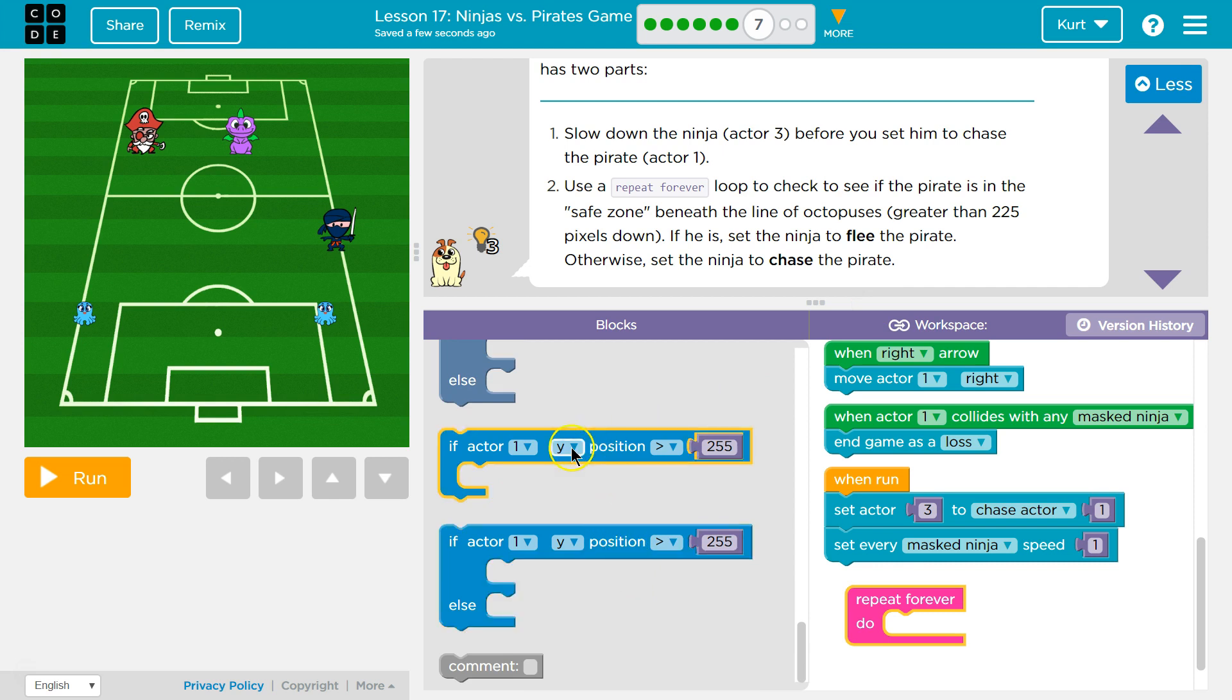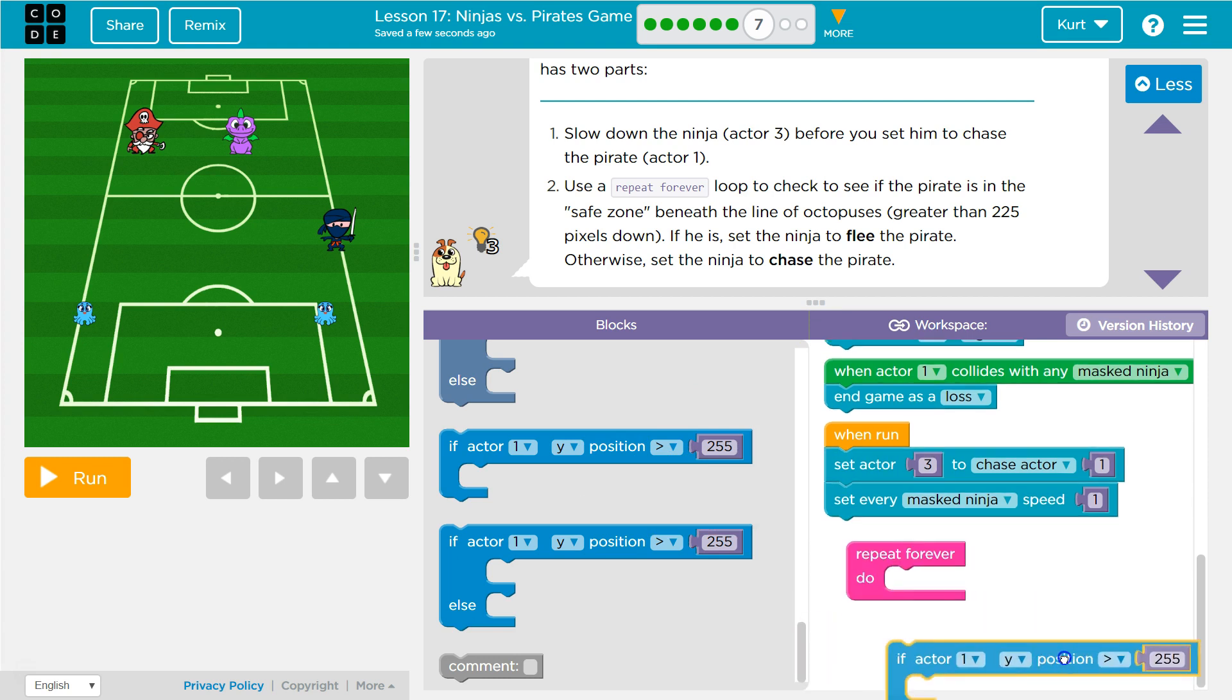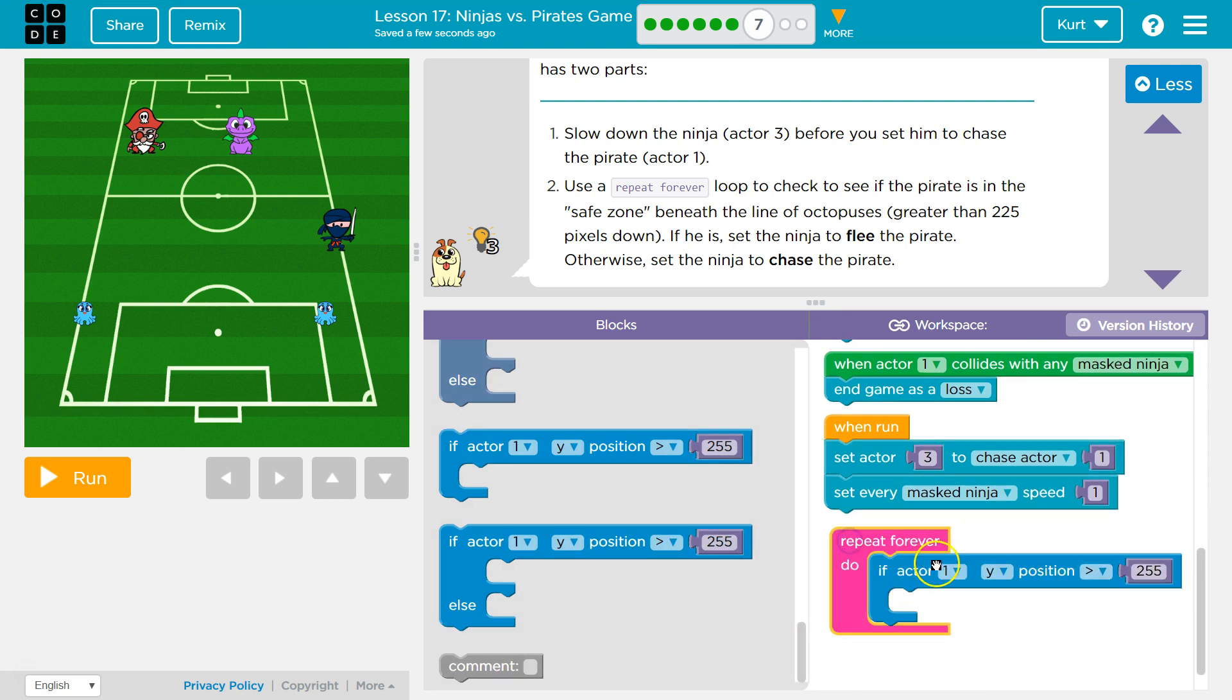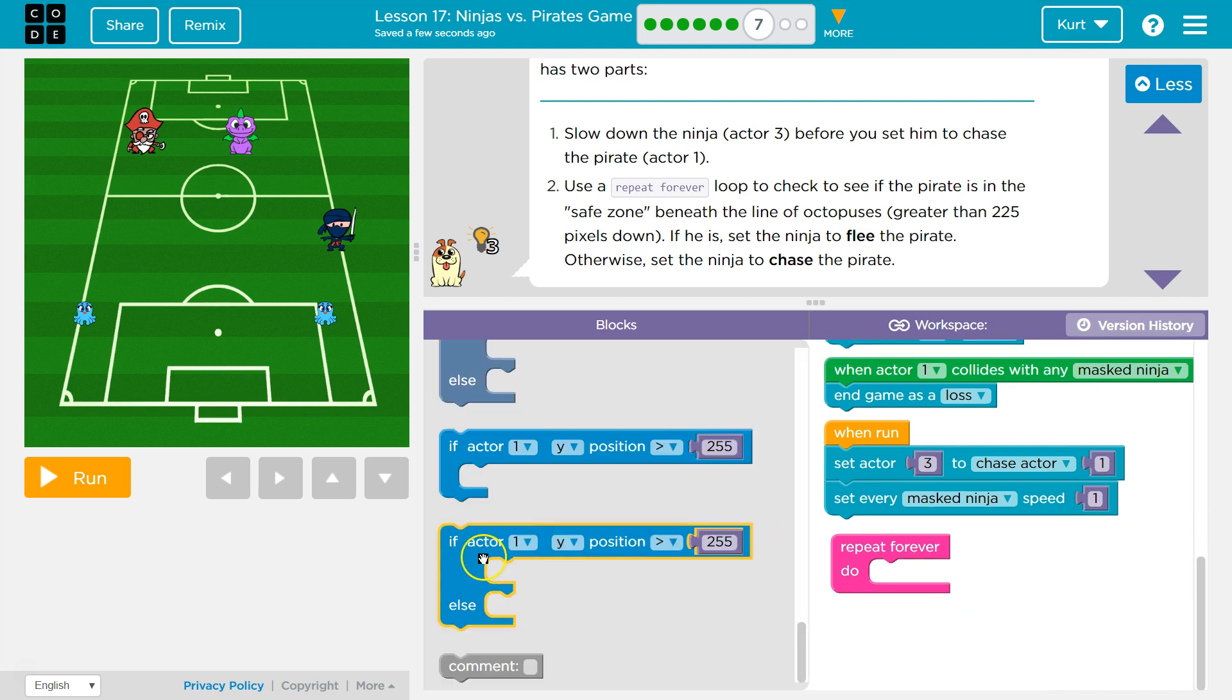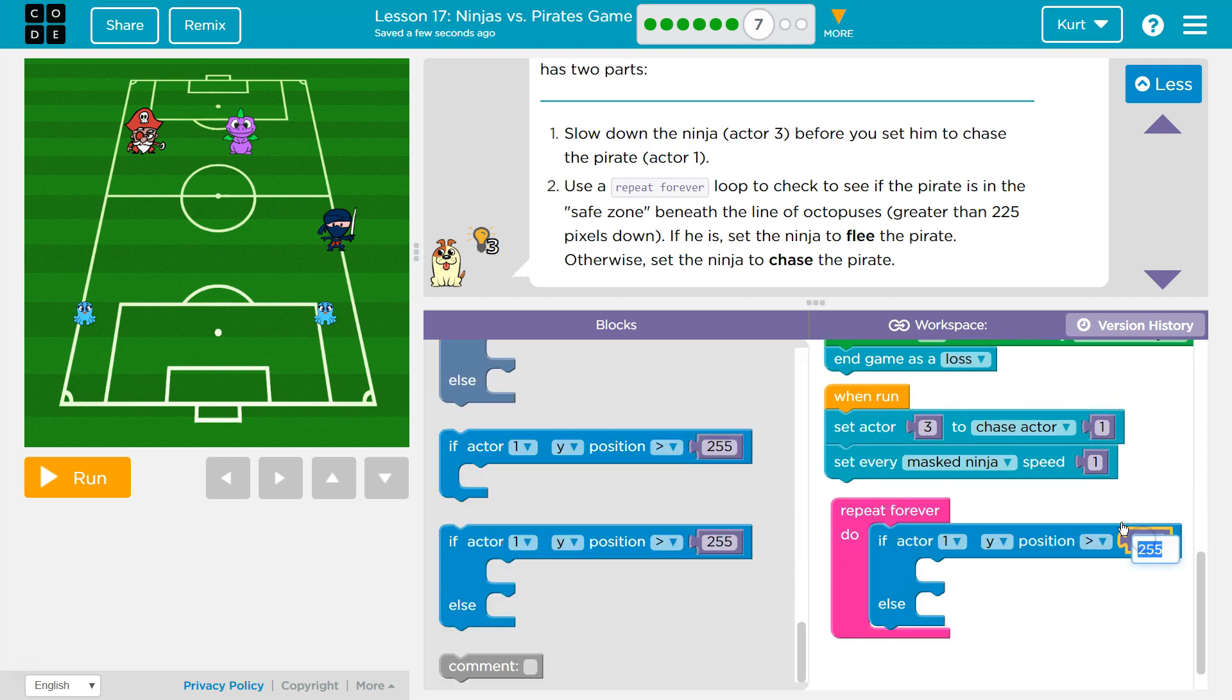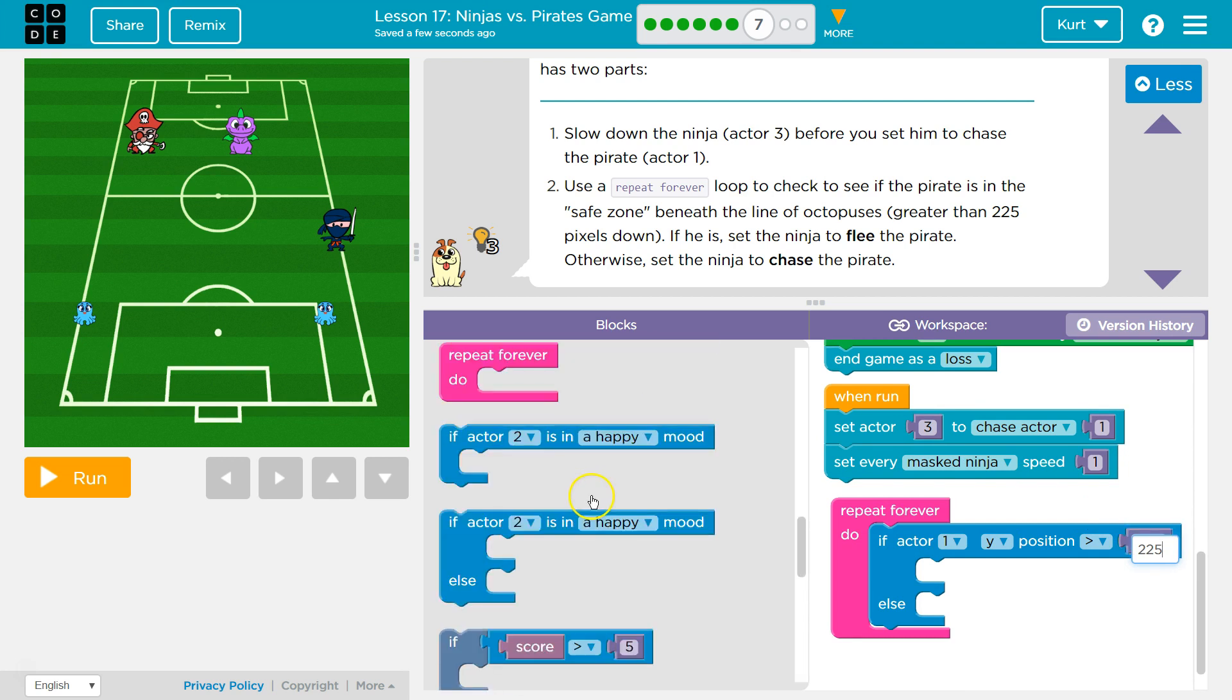So if the actor, yep, if the actor 1, that would be my pirate, is beneath 225. So I have actor 1. Oh no, if actor 1 is greater than 225, I think this is it. Yep. So we're going to put that in our repeat forever loop. So if actor 1's Y position is greater than 255, no, 225. So if it's greater than 225 pixels down, set the ninja to flee. I need an if else, I can already tell. Whoops, because it has an else. So 225, we're going to set the ninja to flee.